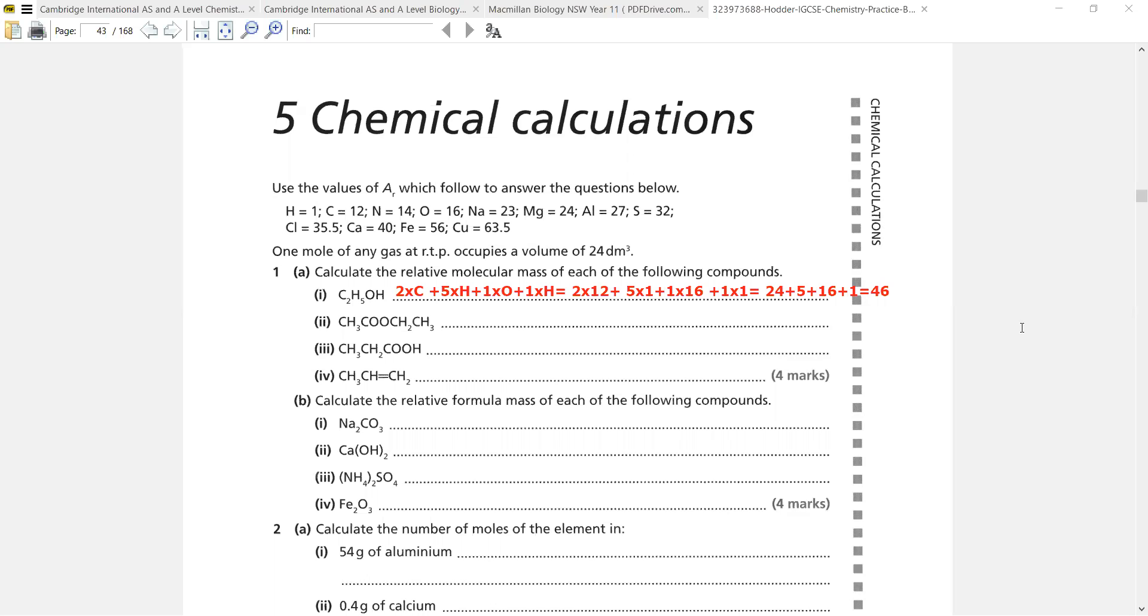One A has been clearly shown. 1a2, 3 and 4 you will do yourself. Coming to the relative formula mass of each of the following compounds. Here, what we will do in terms of relative formula mass: two multiplied by Na plus one multiplied by C plus three multiplied by O. So now I will write two multiplied by 23 plus one multiplied by 12 plus three multiplied by 16. Can anybody tell me what will be the answer?